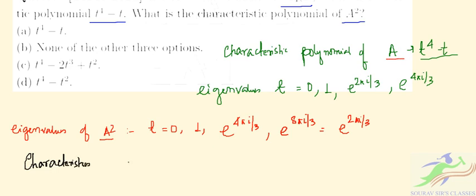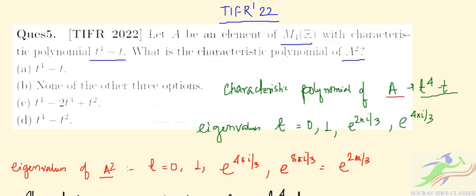The characteristic polynomial of A² will be t⁴ - t. So in this question 5, the correct option will be t⁴ - t, that is option a.